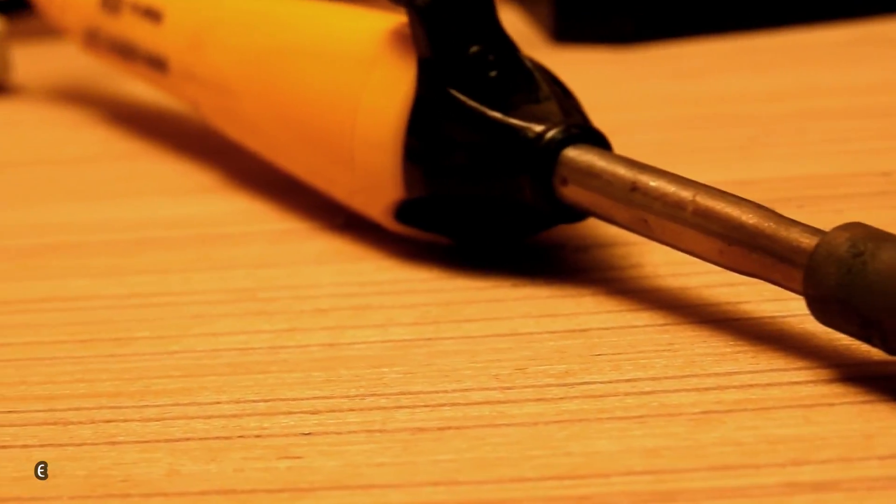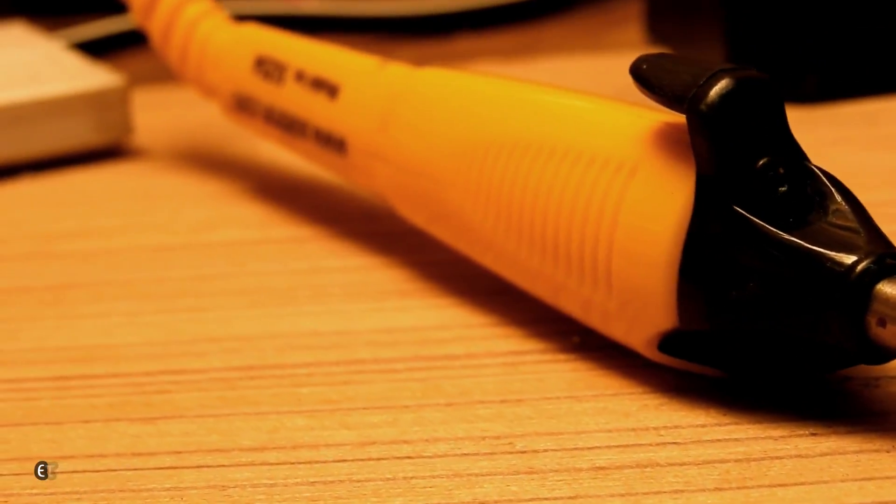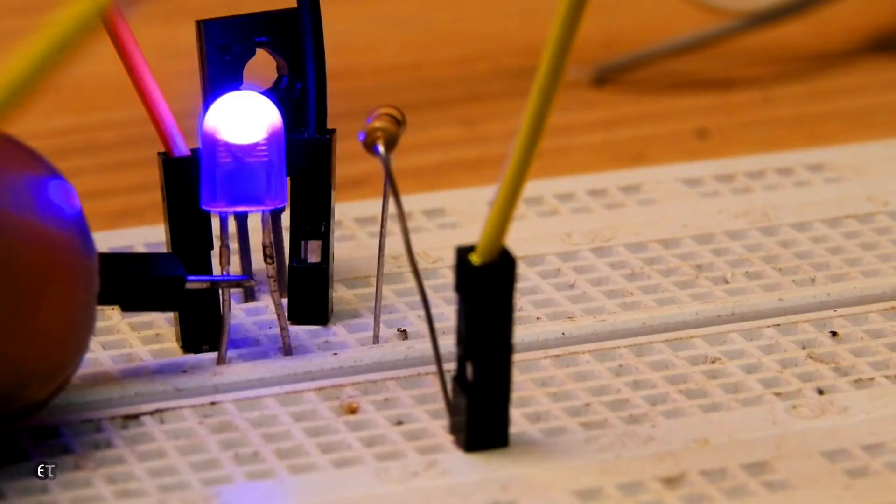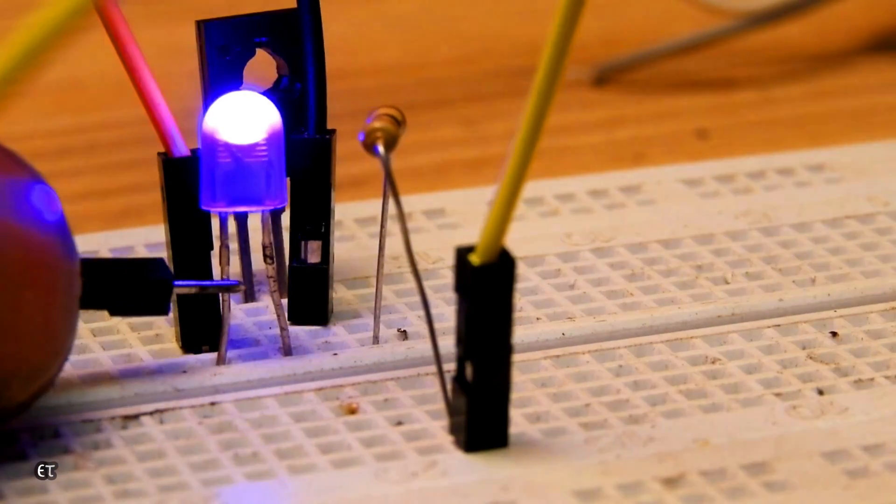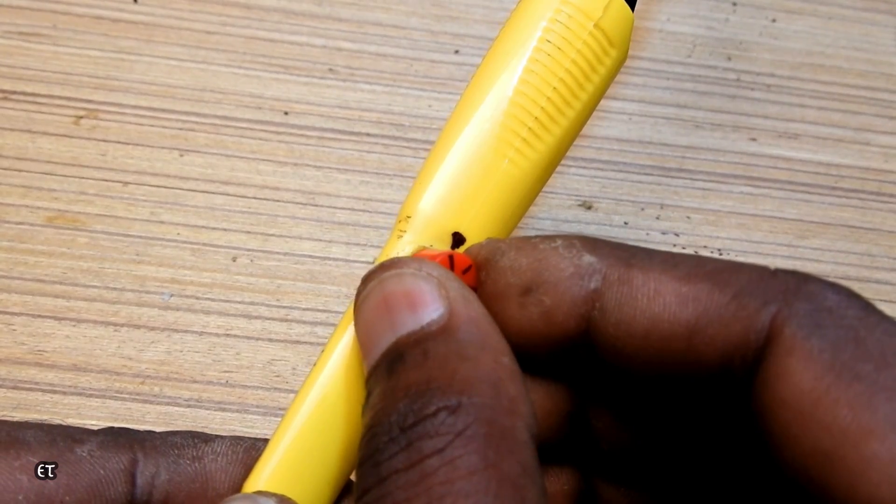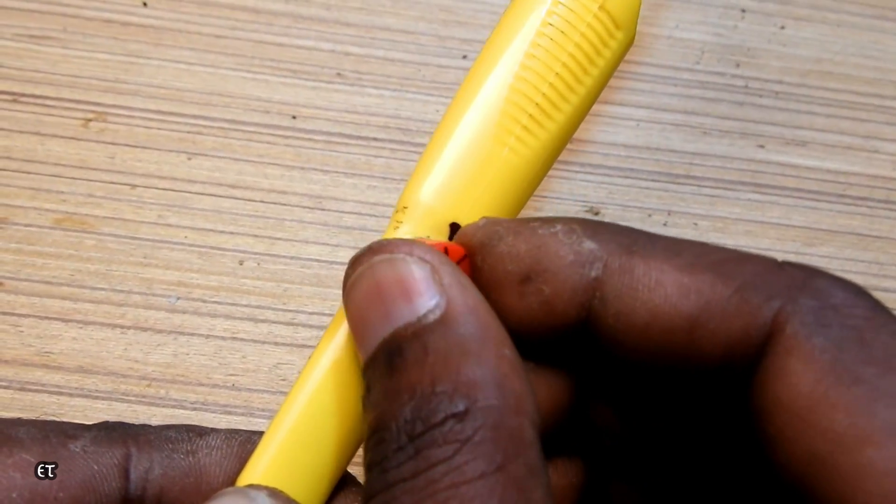This is a normal soldering iron. You can buy this soldering iron for only 200 rupees. I have changed this soldering iron a little bit. When I turn it, the temperature will decrease and increase.